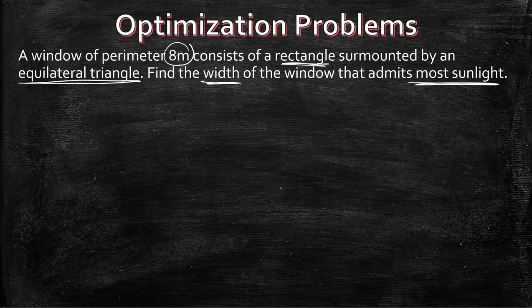We've done a similar example before. When you see something that refers to the most sunlight, you know that sunlight goes through a window, which means that you are looking at the area of the window. So we have to understand what our equations are, and we should draw our image. And then from that we can extract what our constraints are.